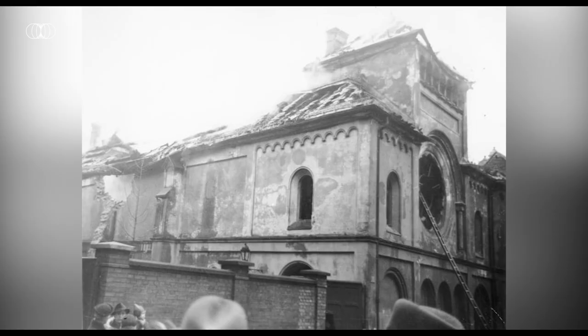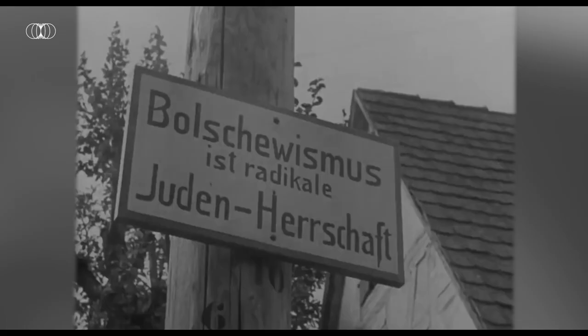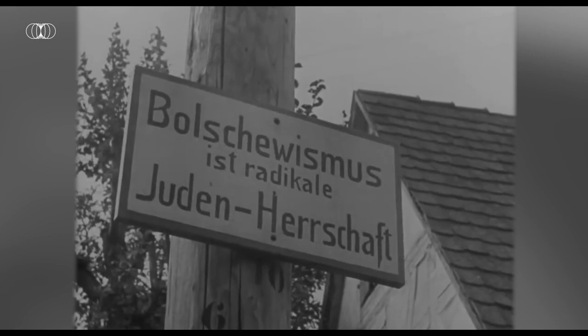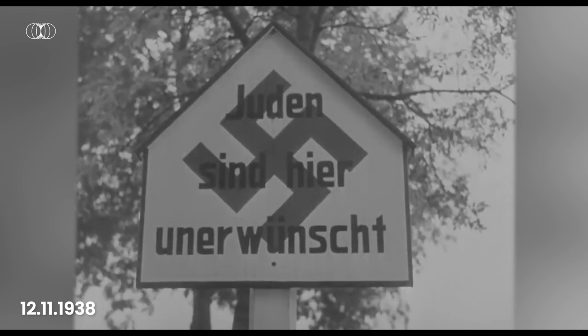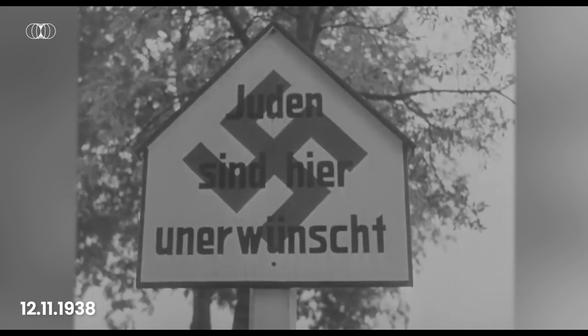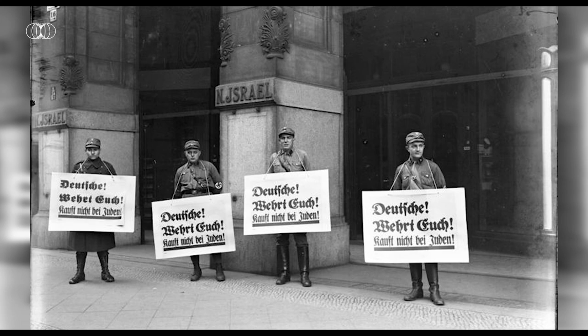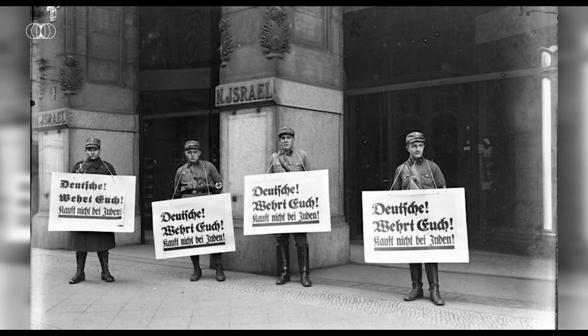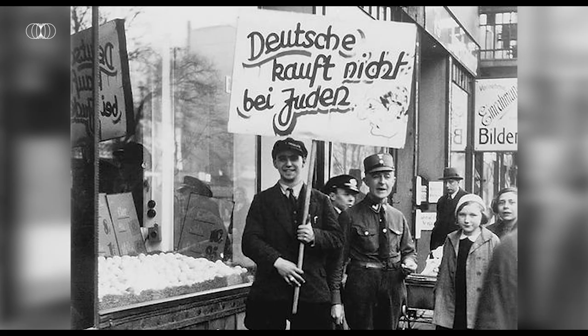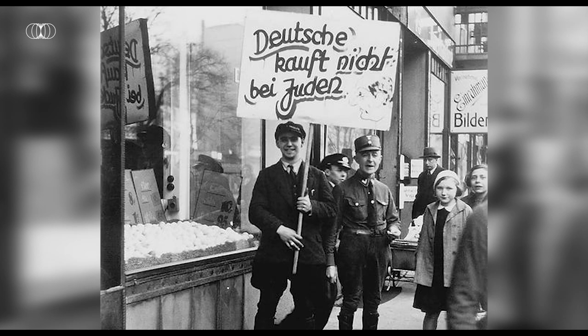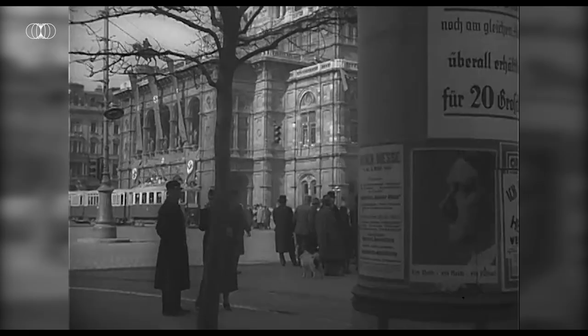Subsequently, a contribution was imposed on them. The use of theatres and cinemas was forbidden, as was the driving of cars. Additionally, on November 12, 1938, Jewish industrial, commercial and craft companies were closed. They were effectively removed from the political, economic and cultural life of Germany. In 1933, Germany was inhabited by over half a million Jews. Six years later, it was less than half.